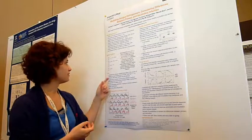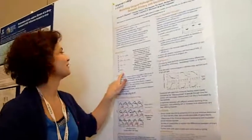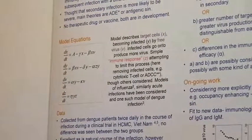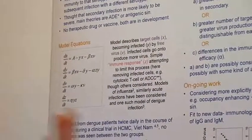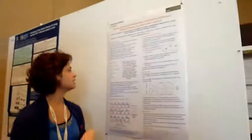The model I'm describing here is described by these equations and it's a within-host model considering target cells, virus that will infect these target cells, go on to produce more virus and at the same time a very simple immune response limiting this process.